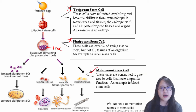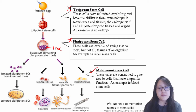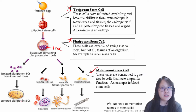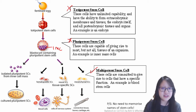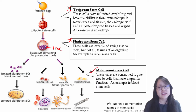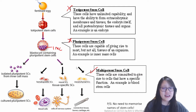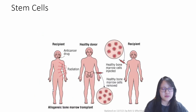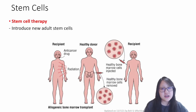Scientists have tried to isolate these inner mass cells — they are pluripotent stem cells — isolate them, culture them, and make them into specific types of tissue cells with specific functions in order to help healing and things like that. There are some things that have worked and some things that have not. What's more common, though — this is kind of experimental — what's more common are stem cell therapies in terms of bone marrow transplant.